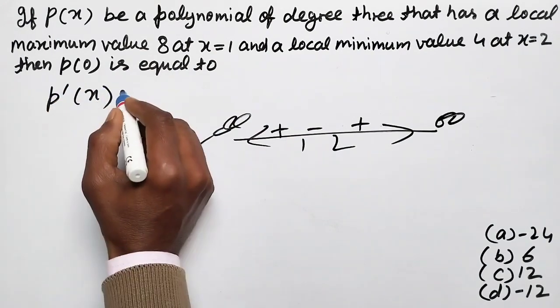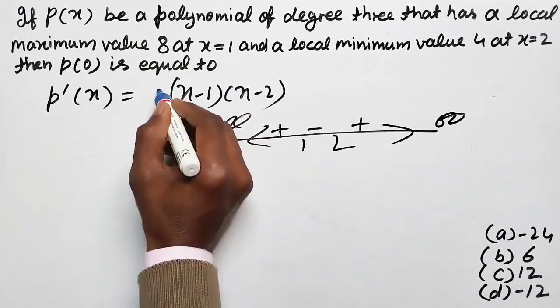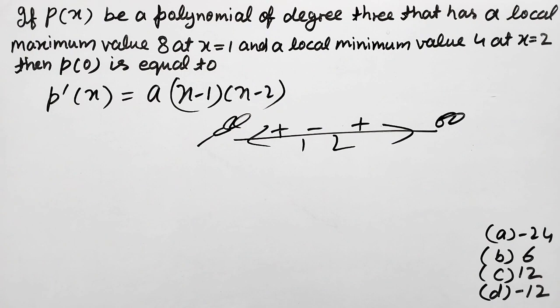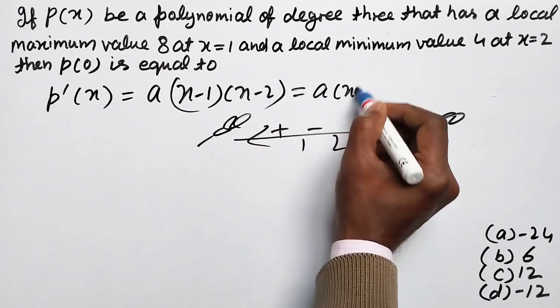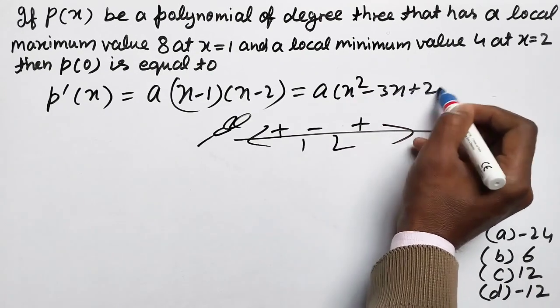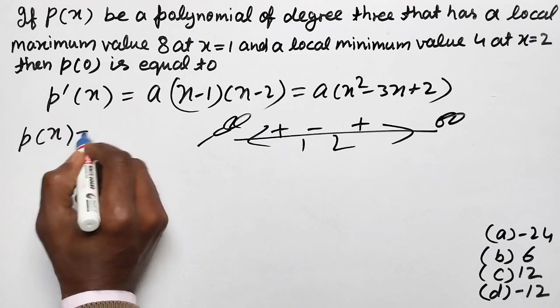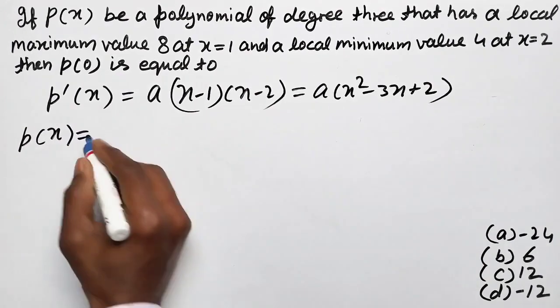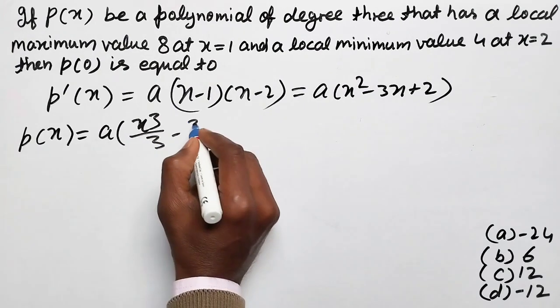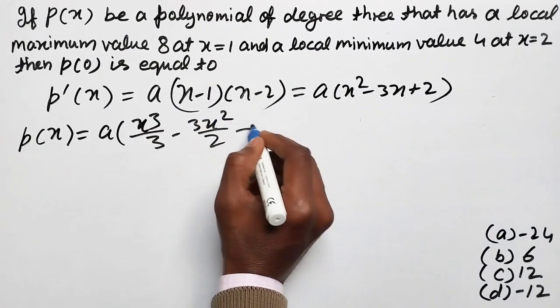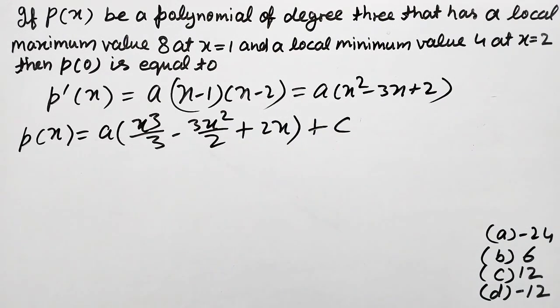Means P'(x) equal (x minus 1)(x minus 2) and here constant. We can write it as A(x² minus 3x plus 2). Means if we integrate this, the polynomial will be A(x³/3 minus 3x²/2 plus 2x) plus arbitrary constant C.